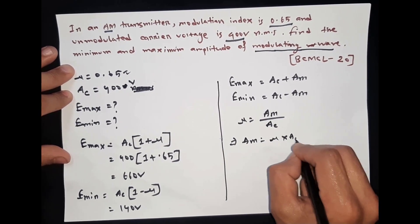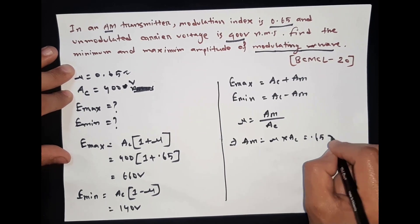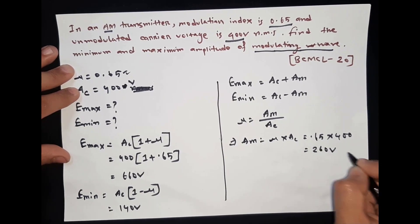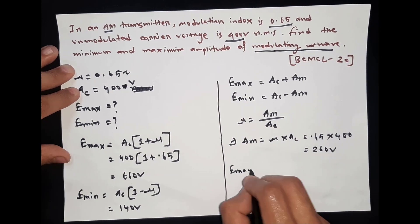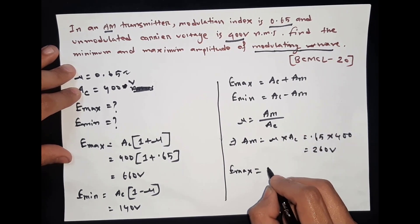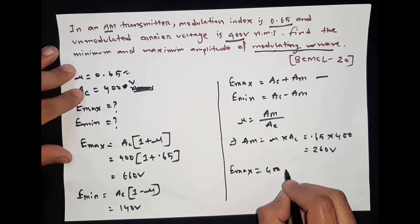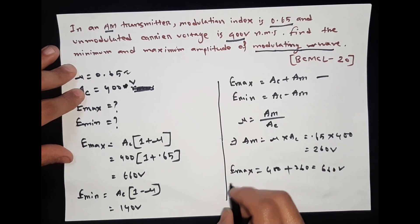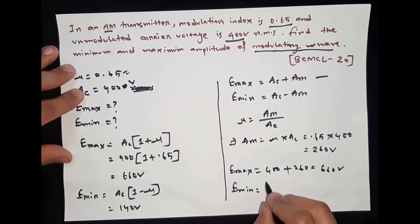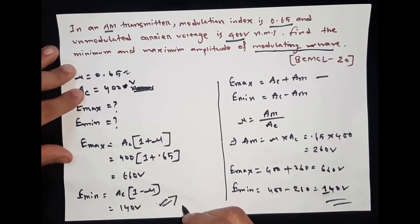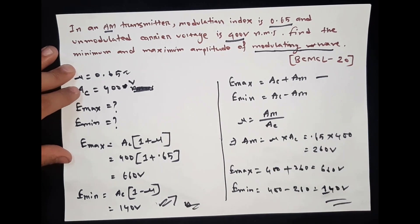The mu value is 0.65 and the AC value is 600V, giving an AM value of 200V. So, the maximum amplitude of the modulating wave equals AC plus AM, which is 600V plus 200V, giving 800V. The minimum amplitude equals AC minus AM, which is 600V minus 200V, giving 400V. So, the results are: maximum = 800V and minimum = 400V.